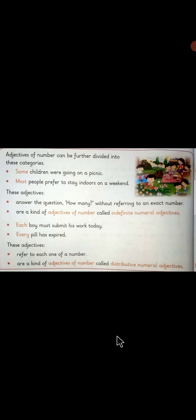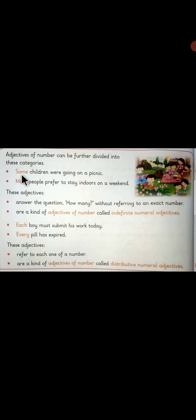Now we move ahead. Adjectives of number can further be divided into more categories. For example: 'Some children were going on a picnic.' Another example: 'Most people prefer to stay indoors on a weekend.' Here, the adjectives 'some' and 'most' answer the question 'how many.' How many children were going on a picnic? Some children. How many people prefer to stay indoors? Most people. They are answering the question 'how many' without referring to an exact number.